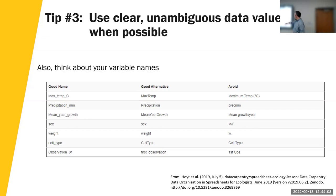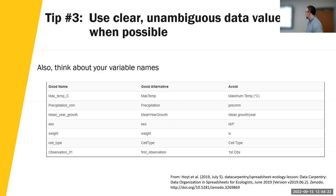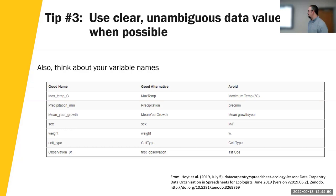The last example here is 'cell type' — the challenge is the space. For a lot of systems, spaces are problems. If you use GIS at all, they won't let you use spaces. If you work in a command line interface with R, Python, or any command line, spaces are used to delineate different commands, so you have to do workarounds. On the left under 'good name,' none of the examples use spaces, and all are pretty clear and simple in their characters. It'll solve future problems if you do it that way.